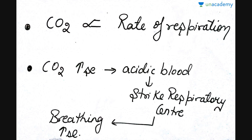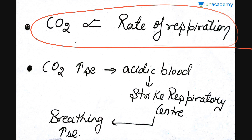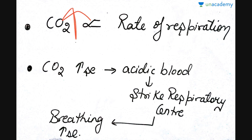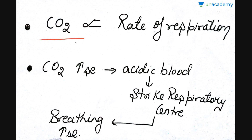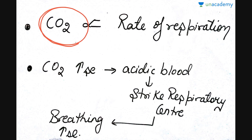So we are starting with some important things — a short trick and formula I have made to help you remember and answer many questions from this basic principle. Carbon dioxide is directly proportional to the rate of respiration as well as the rate of breathing. If carbon dioxide increases in the blood — I am talking about in the blood, not in the environment — then the rate of respiration will also increase. If carbon dioxide decreases in the blood, then the rate of breathing will also decrease. So our breathing is totally dependent on the concentration of carbon dioxide inside our blood.